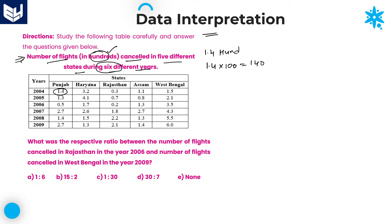According to the question, there are total five states: Punjab, Haryana, Rajasthan, Assam, and West Bengal. And the number of years are six years: 2004, 2005, 2006, 2007, 2008, and 2009. The states are Punjab, Haryana, Rajasthan, Assam, and West Bengal — that is the information according to the question.